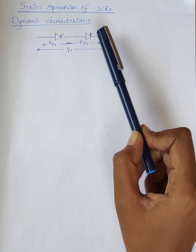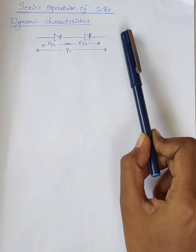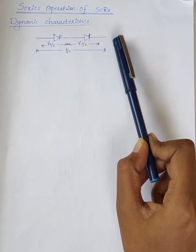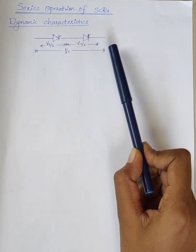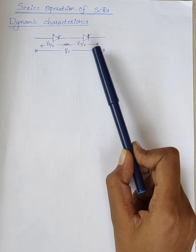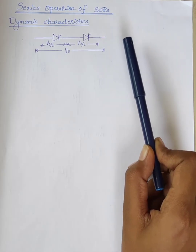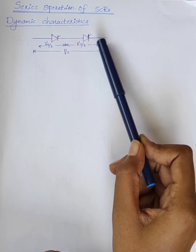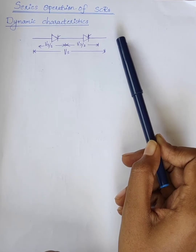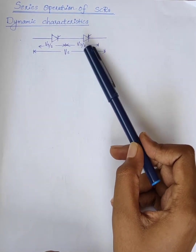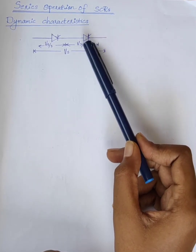Hi students. In the last class we discussed the series operation of SSRs by considering its static characteristics. Today we will discuss the dynamic characteristics of series connected SSRs. Like static characteristics, the SSRs with the same rating and specification do not have identical dynamic characteristics. Dynamic characteristics means the characteristics of a switch when it changes from on state to off state. Here we are discussing the unequal voltage distribution during the transient conditions of turn-on and turn-off.